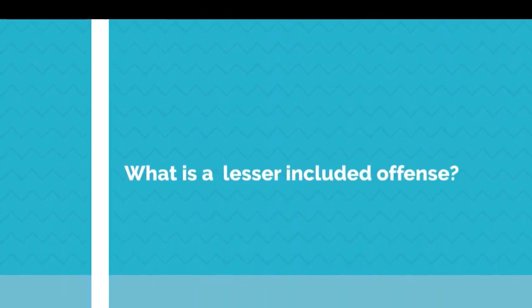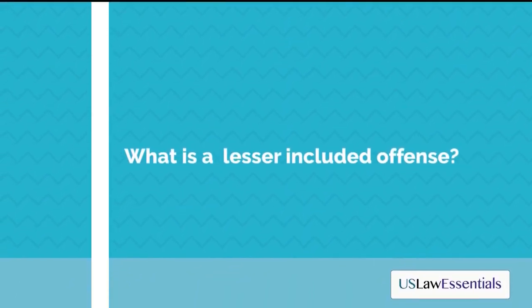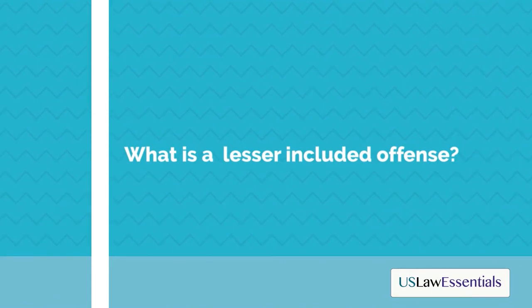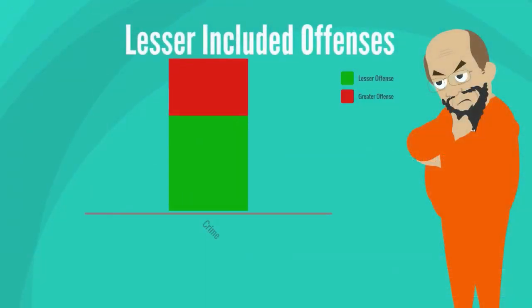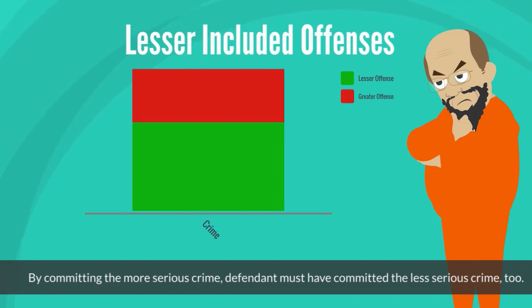In this video, we will introduce the meaning of a lesser-included offense. A lesser-included offense is a crime that a person must have committed in the course of committing a more serious crime.